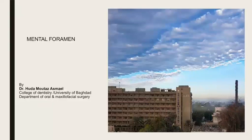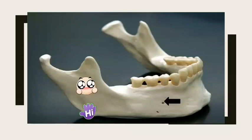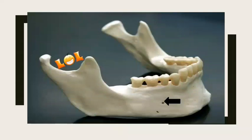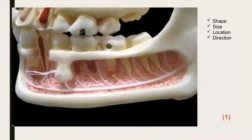Our lecture today is about the mental foramen. You can see in this picture the mental foramen, the body of the mandible, the ramus, and the angle of the mandible. The ramus of the mandible ends in its superior border in two processes: the first is the coronoid process and the second is the condylar process.